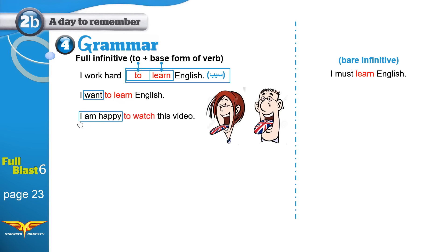We also add 'to' when we use the structure: adjective + be (present or past) + to. For example: 'I am happy to see you,' 'I am surprised to see you,' 'I was very mad to lose the match.' We also use 'too + adjective + to': 'You are too young to drive.' And 'adjective + enough + to': 'I am old enough to drive.'